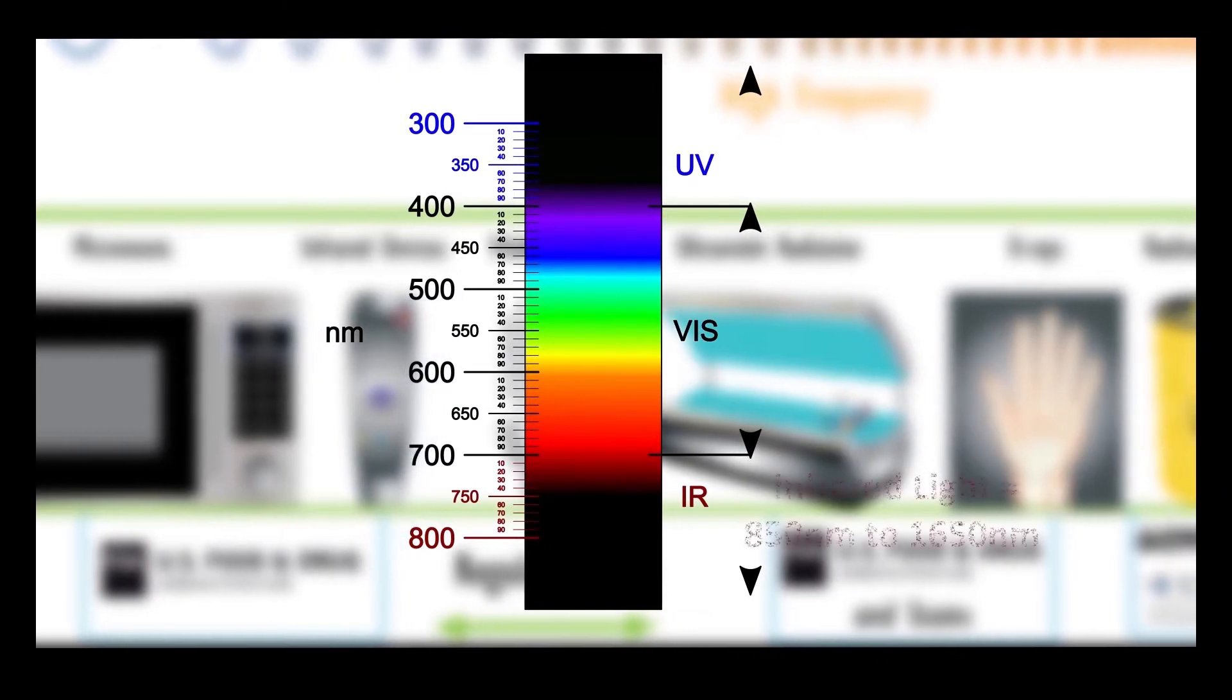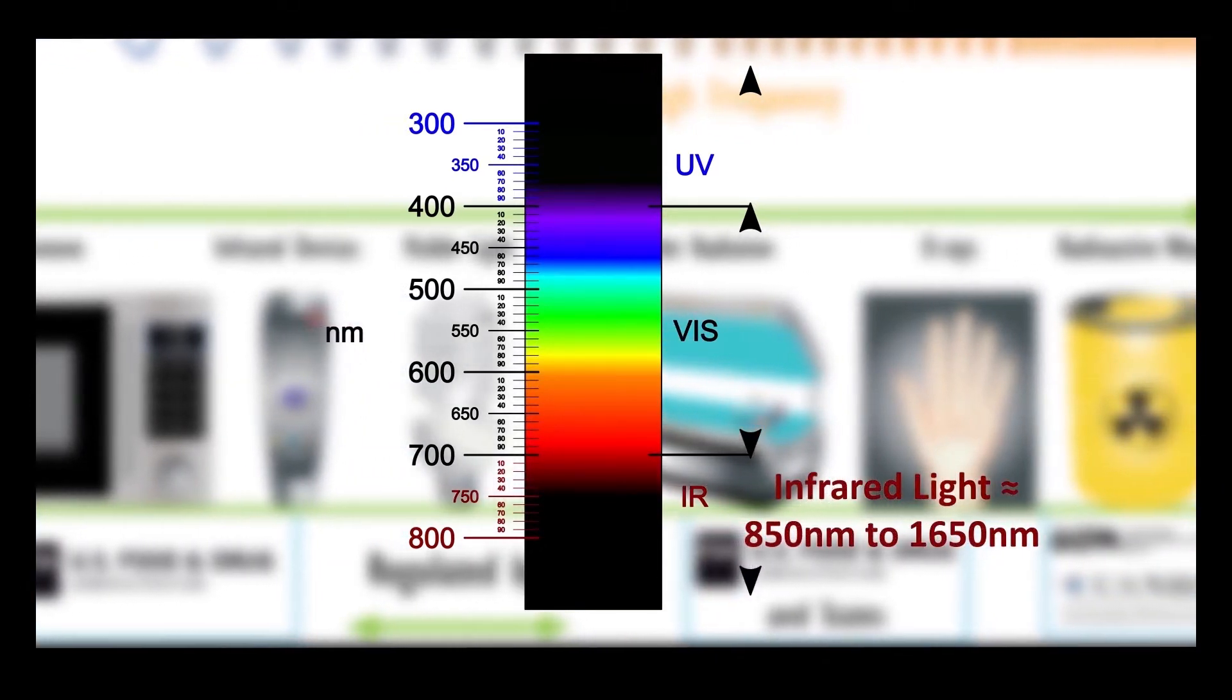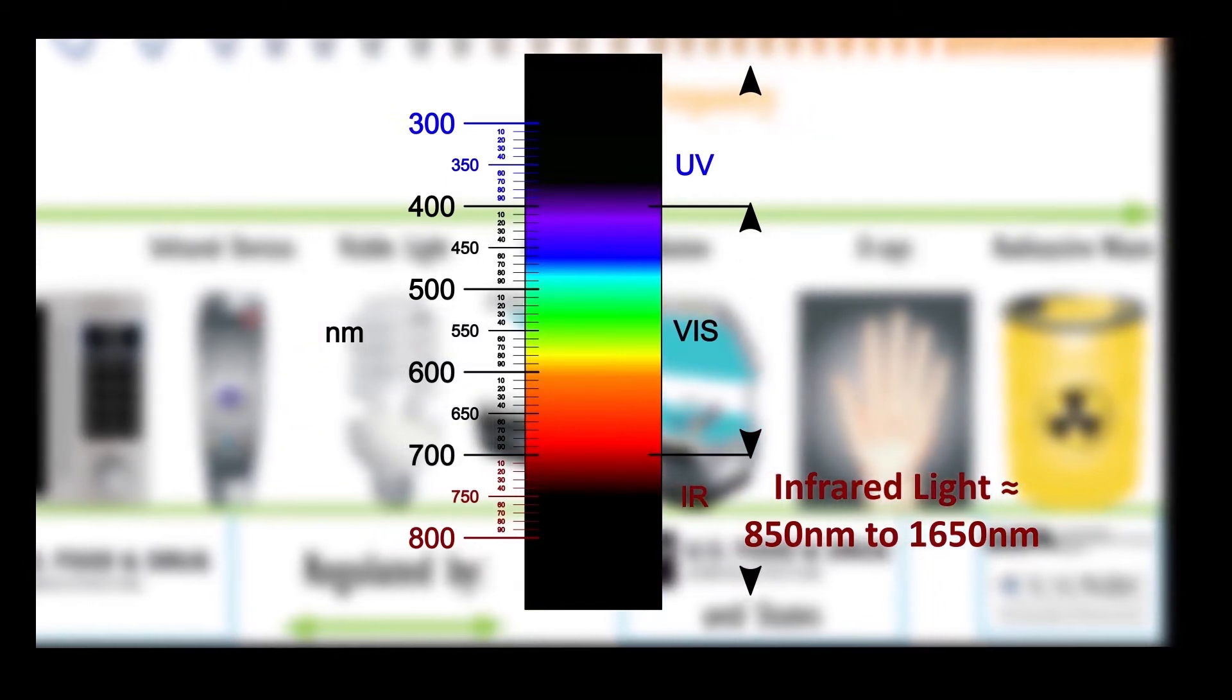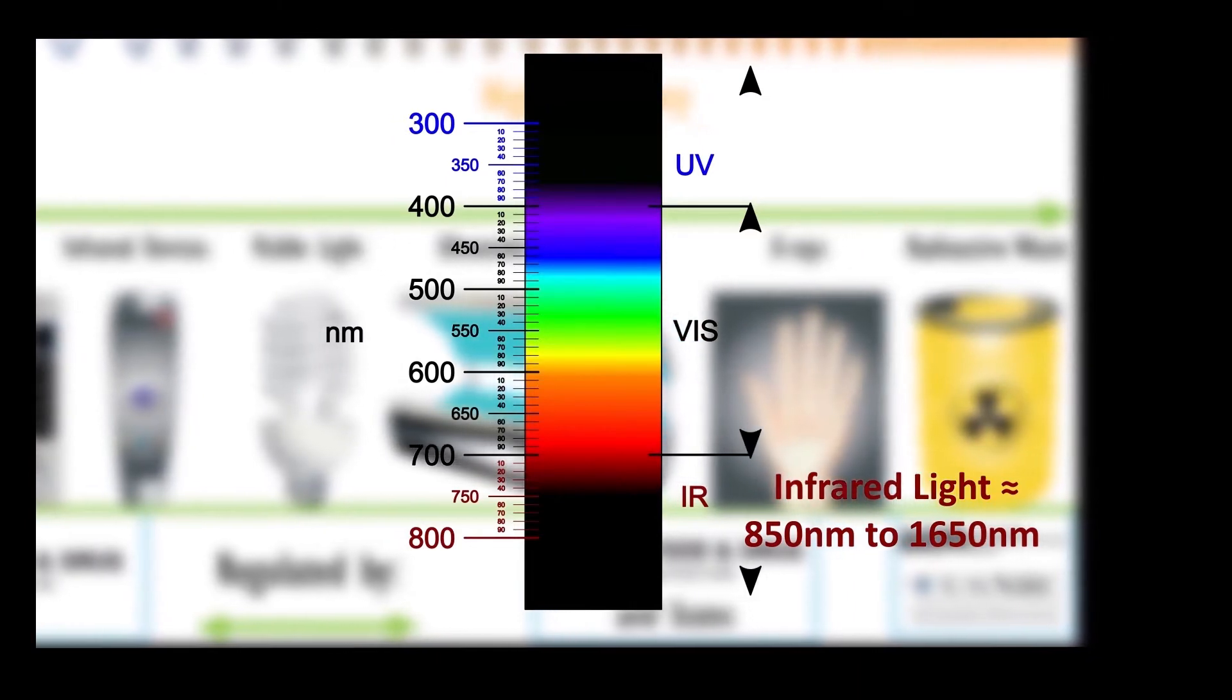Now as far as fiber optics are concerned, the light that is used to send information is all infrared. We can and do use visible light sources in fiber optics, particularly red, but it's used only as a means of tracing lines and or troubleshooting.